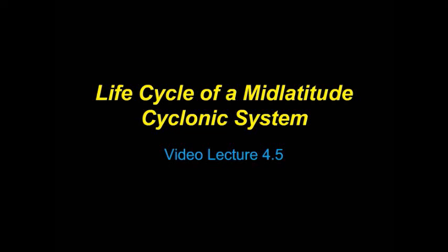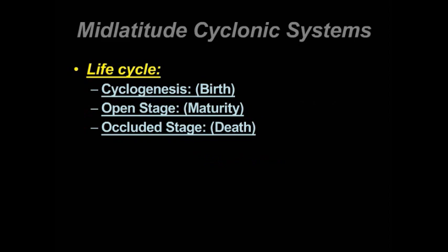Video Lecture 4.5: The Life Cycle of a Mid-Latitude Cyclonic System, which we can relate to human beings. Human beings have their origin, their birth, which we'll refer to as cyclogenesis. Over time we grow up, become more mature, grow older — we'll refer to that as the open stage. And then finally, we die. We'll think of the mid-latitude cyclonic system's death as the occluded stage. Keep in mind from the previous lecture that these last about 3 to 10 days.